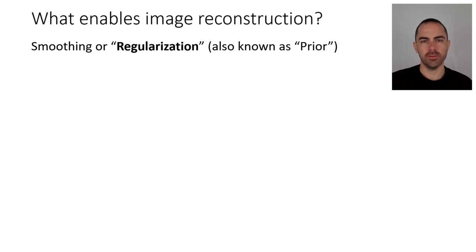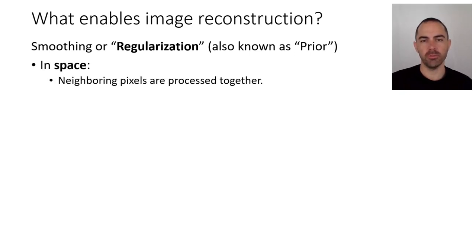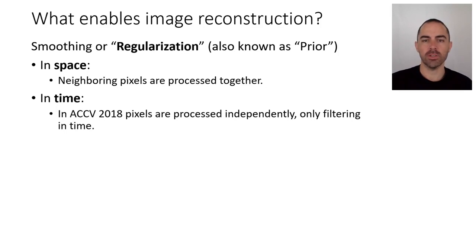Some methods are not as evident in their regularization. What is the regularization in time filters? It's a different type — some filtering, some smoothing. The general idea is regularization or prior, and you can do this in space, meaning neighboring pixels are processed together, or you can do it in time. The work in 2018 by a group at the Australian National University processed pixels independently — no spatial dependency, only filtering in time — and yet they showed that image reconstruction is possible even without spatial regularization.